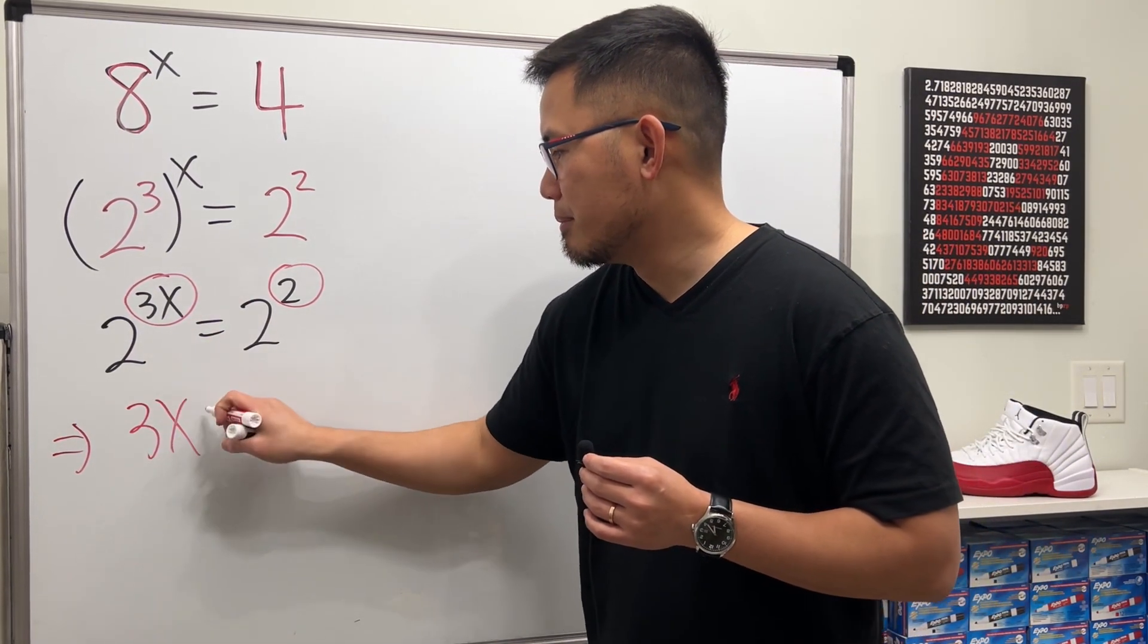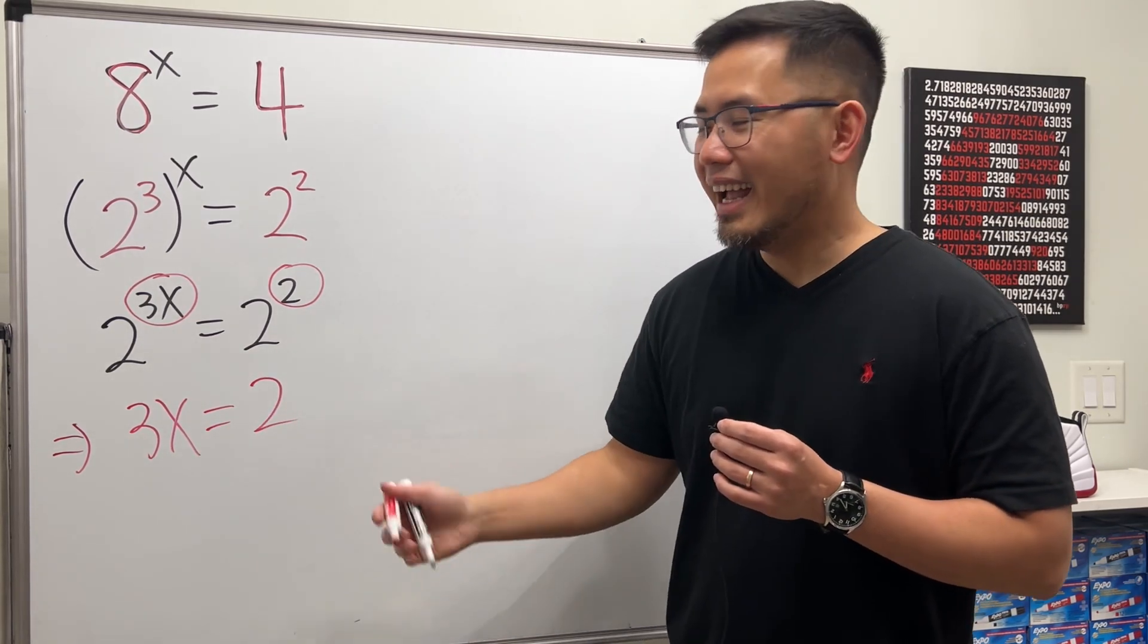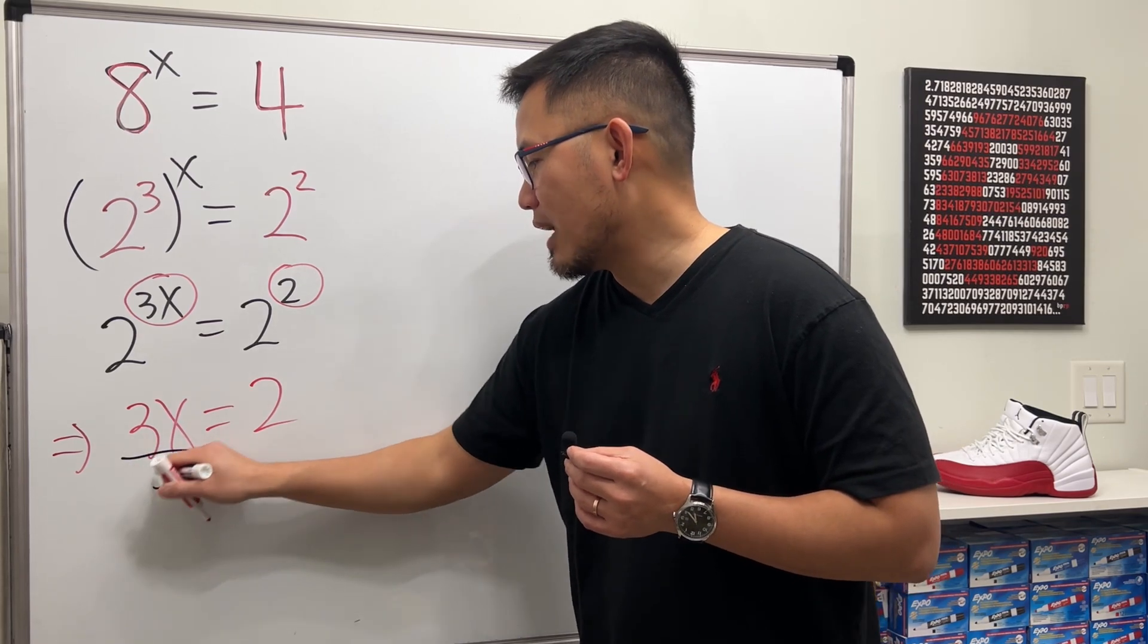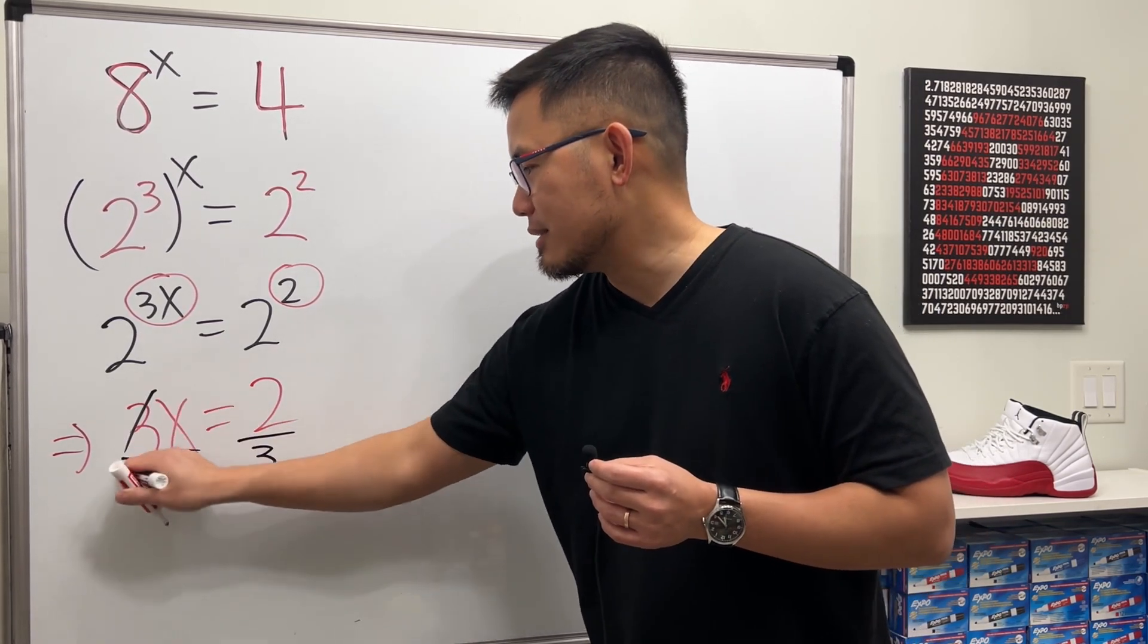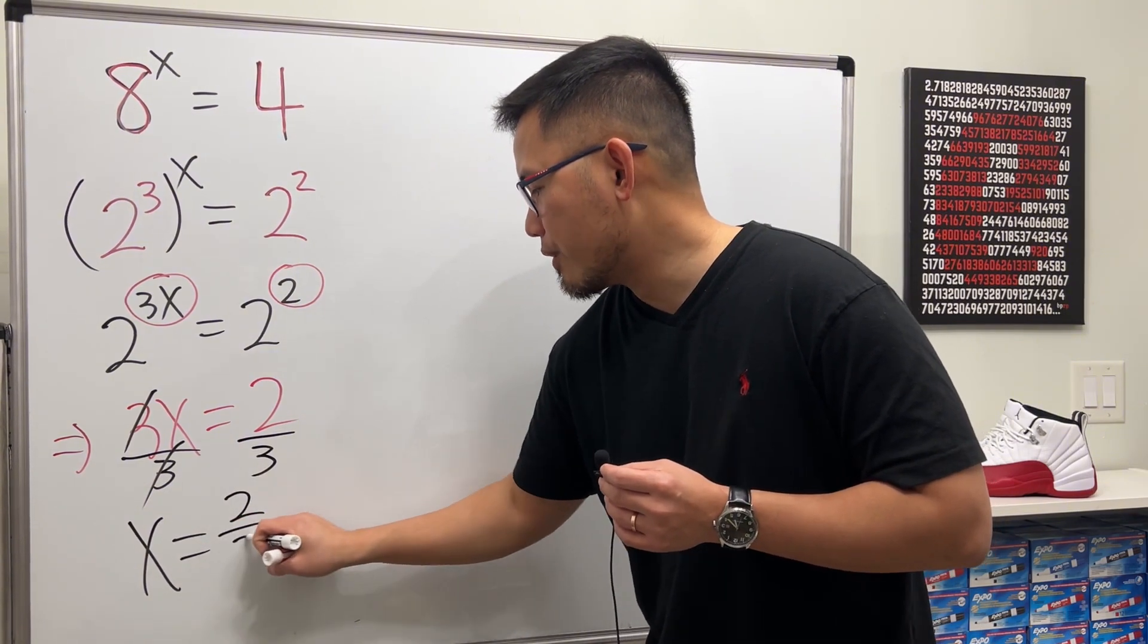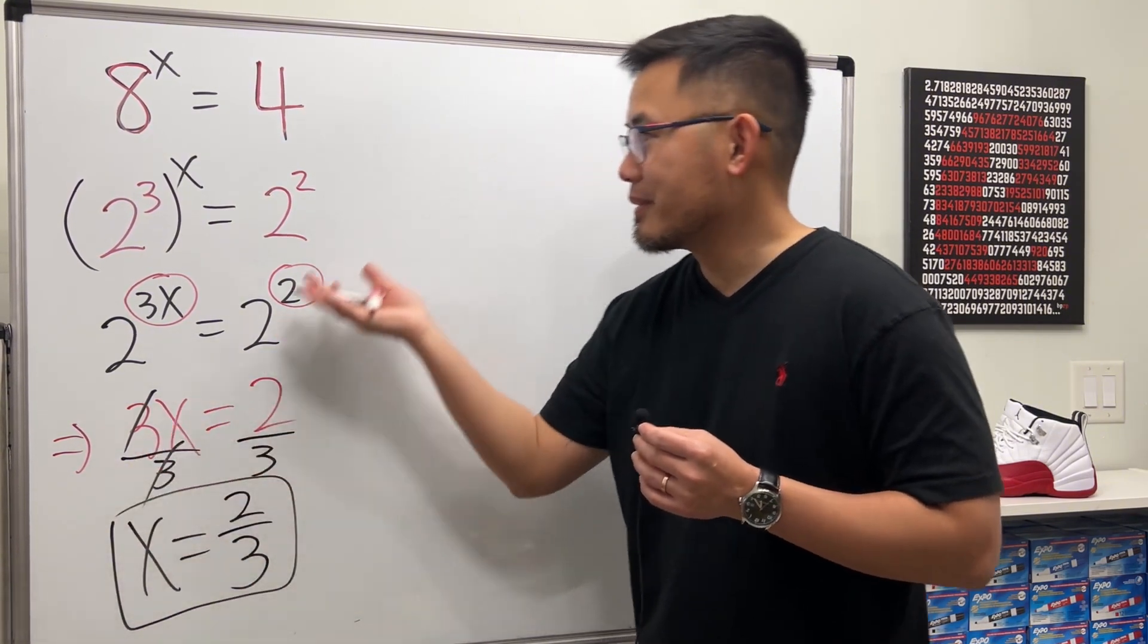So from here we can say 3x must be equal to 2, and then from here we can just solve this regularly. This is 3 times x, so we can divide both sides by 3, cancel, and then ladies and gentlemen, x is 2 over 3. So that's how we get it.